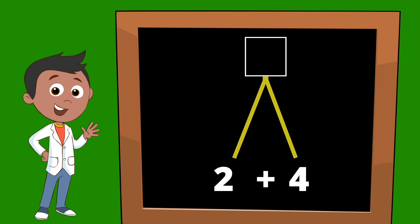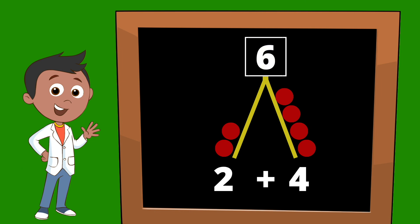Those are the two numbers we'll be adding together and our mystery number will go on top. Let's add by adding circles and counting. On the left we have the number two, so we're going to add one, two circles. On the right we have the number four, so we're going to add one, two, three, four circles. If we count all the circles, we have six circles. So our total, our mystery number, is the number six.